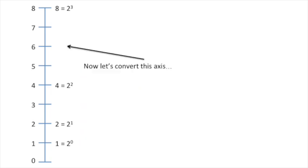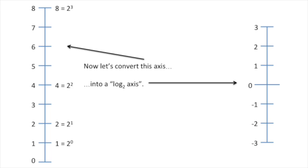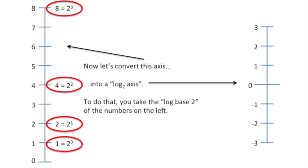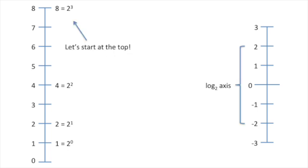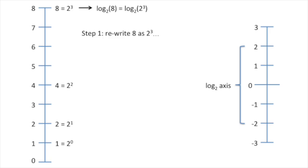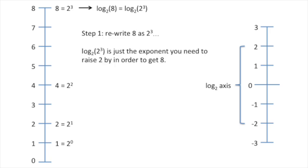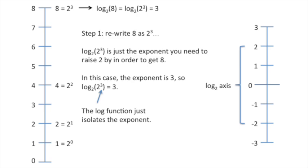Now let's convert this axis into a log base 2 axis. To do that, you take the log base 2 of the numbers on the left. We'll start at the top and take the log base 2 of 8. The first and really only step in calculating a log is to simply rewrite the number as a power of 2. In this case, we rewrite 8 as 2 to the third. The log base 2 of 2 to the third is just the exponent you need to raise 2 by in order to get 8 — in this case, the exponent is 3. So the log base 2 of 2 to the 3 equals 3. The log function just isolates the exponent.